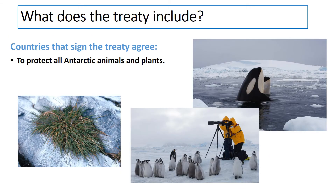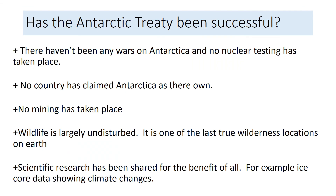Countries signing up to the treaty are also agreeing to protect all Antarctic animals and plants, ranging from the Antarctic hair grass all the way through to some of the largest species of whales.